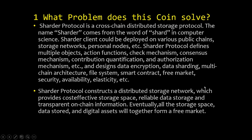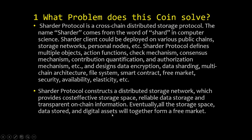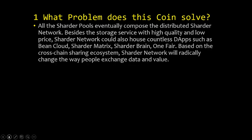The Sharder Protocol constructs a distributed storage network which provides cost-effective storage space, reliable data storage, and transparent on-chain information. Eventually, all of the storage space, data stored, and digital assets will together form a free market. The Sharder Network could also house countless DApps such as Bean Cloud, Sharder Matrix, Sharder Brain, and OneFair. Based on the cross-chain sharing ecosystem, the Sharder Network will radically change the way people exchange data and value.